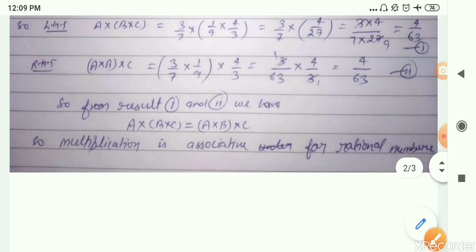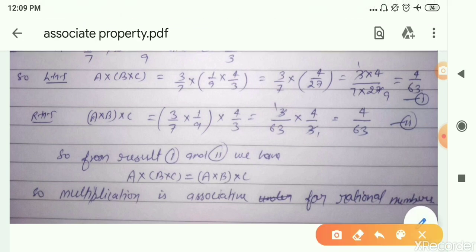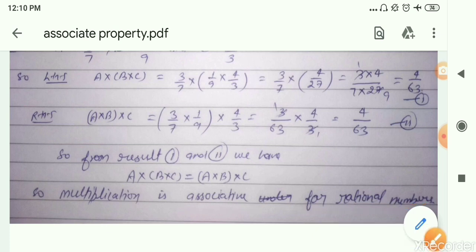From result 1 and result 2 we are getting the same value in both cases. So we can say that the associative property of rational numbers under multiplication is verified. Multiplication is associative for rational numbers.